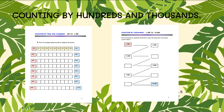By 1000s: 1000, 2000, 3000, 4000, 5000, 6000, 7000, 8000, 9000, 10,000.